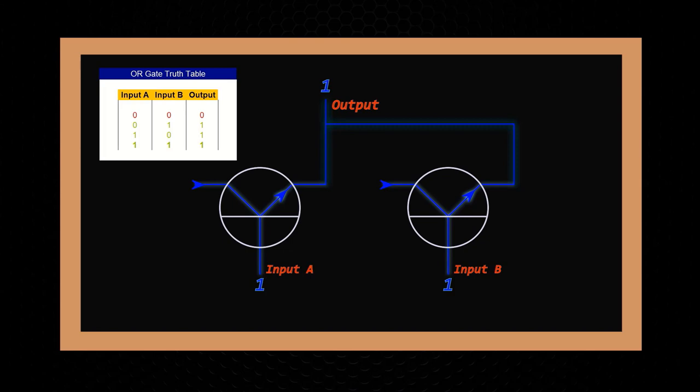There is, however, another logic gate which behaves in the same way as an OR operation, but does not accept the scenario of both inputs being on. It's called an exclusive OR or XOR gate, and it'll only output a one if exclusively input A or input B is set to one.